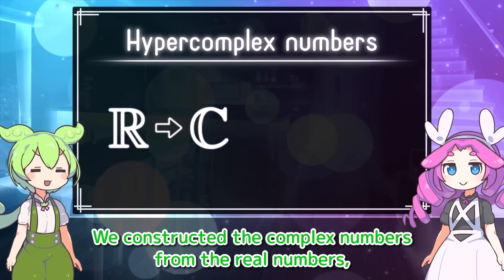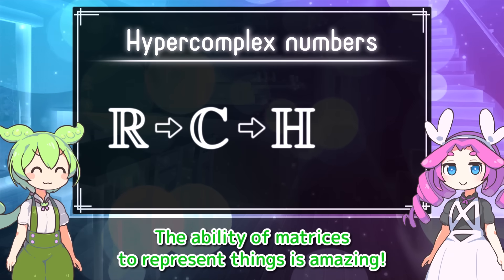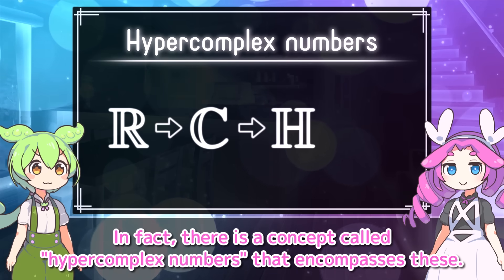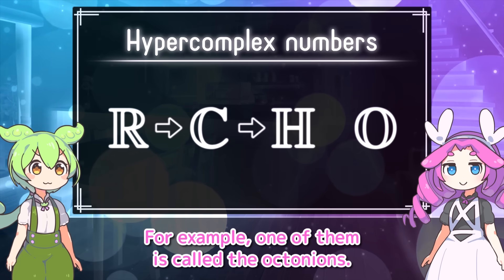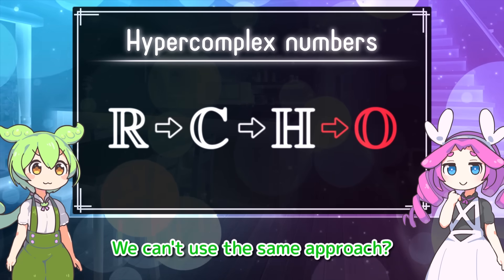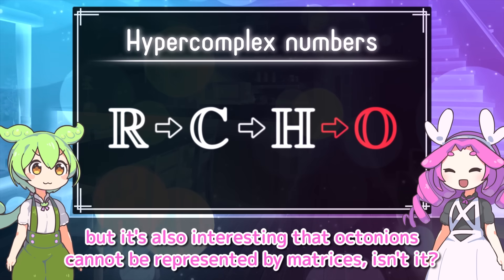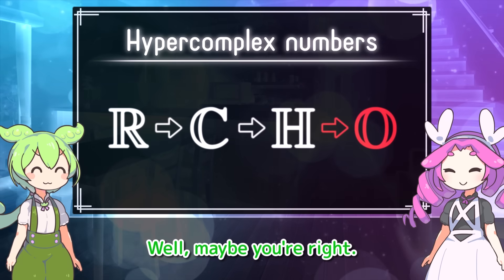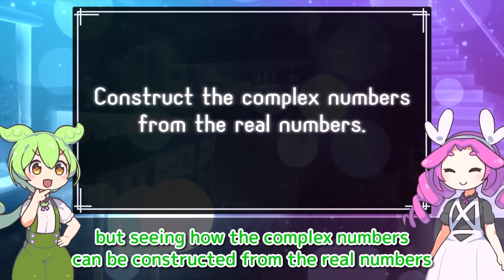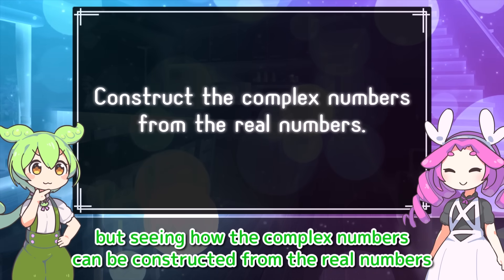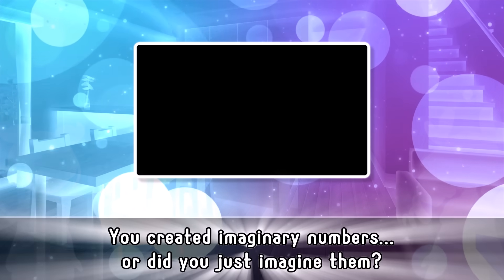We constructed the complex numbers from the real numbers, and the quaternions from the complex numbers. The ability of matrices to represent things is amazing. In fact, there is a concept called hypercomplex numbers that encompasses these. There are various kinds, for example one called the octonions. However, octonions cannot be represented by matrices — we can't use the same approach, which is a bit disappointing, but also interesting. What did you think of today's discussion? Seeing how the complex numbers can be constructed from the real numbers feels like one possible answer to the question of whether imaginary numbers really exist. Take care everyone, see you later.